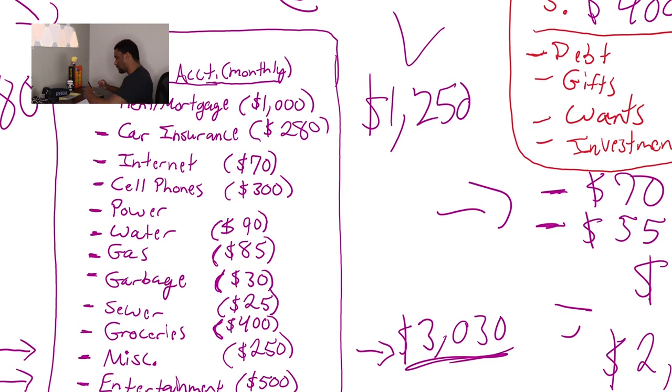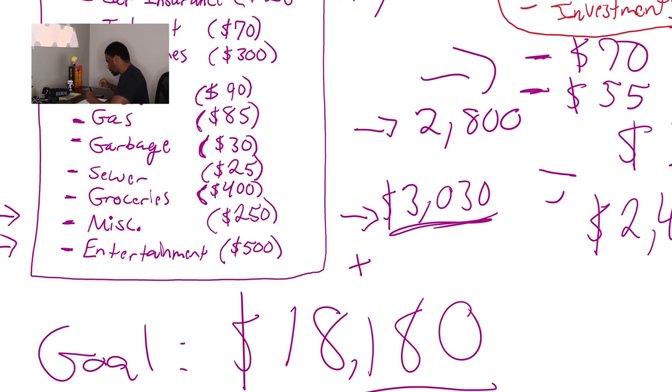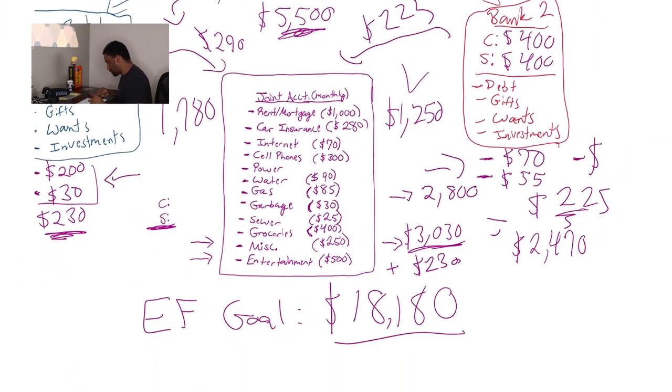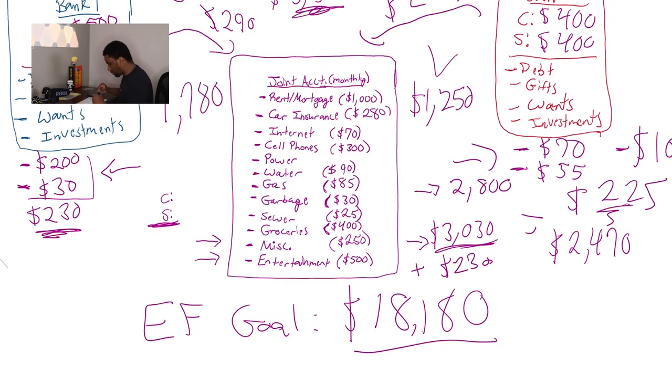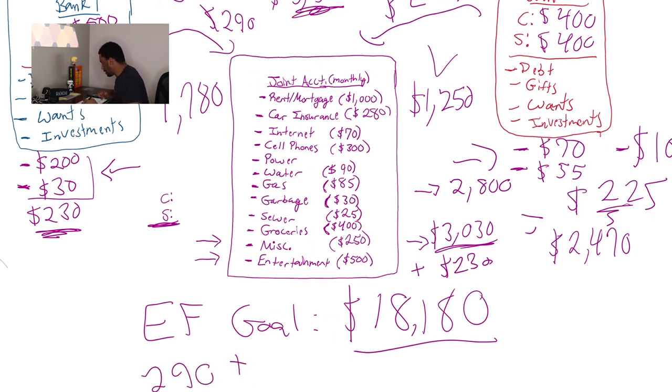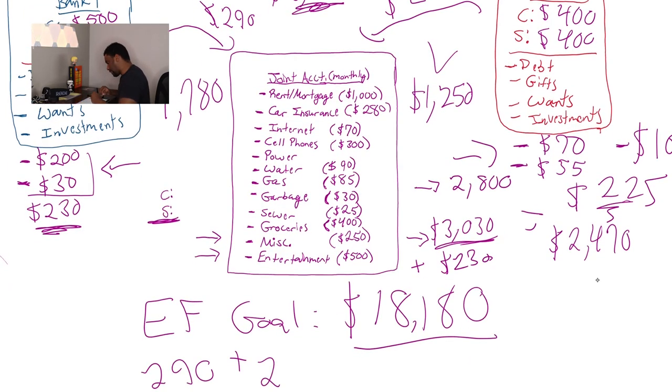you're going to see that typically this couple, let's just throw out a number, is only going to spend about $2,800, which means they're typically going to have an extra $230 per month. So you mean to tell me that you're saving, so you mean to tell me spouse number one is putting $290 in the account every single month, and then spouse number two is putting $225 in there every month, and you're telling me that they're also saving an additional $230 per month?